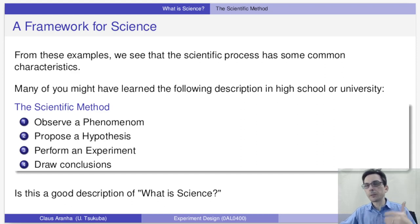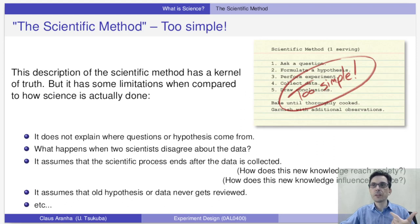Is this a good description of what is science? Well, this description of the scientific method is not exactly wrong, but it's incomplete. It's kind of a strawman of science. So, what's the problem with this description?